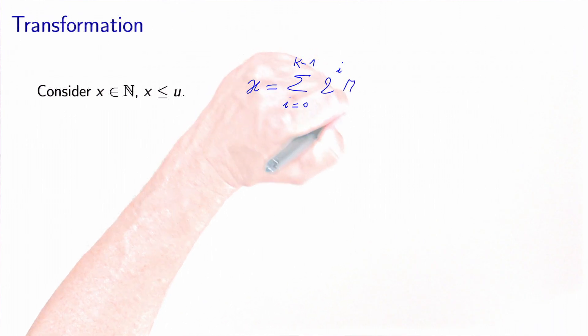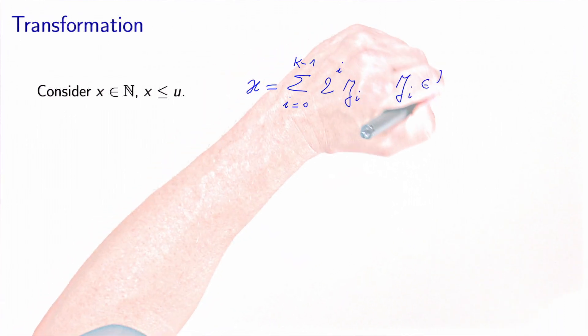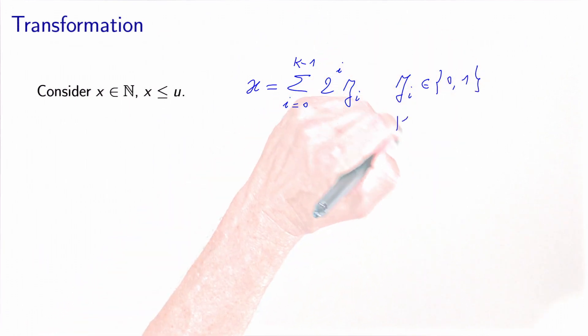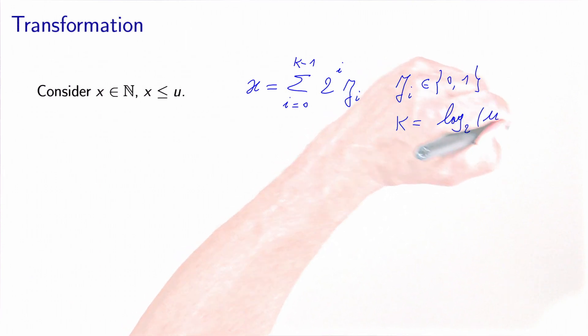Where z_i belongs to 0, 1. It's a binary variable. And k is actually the number of terms in this sum. So this is calculated as log of 2 of the upper bound plus 1 rounded up.